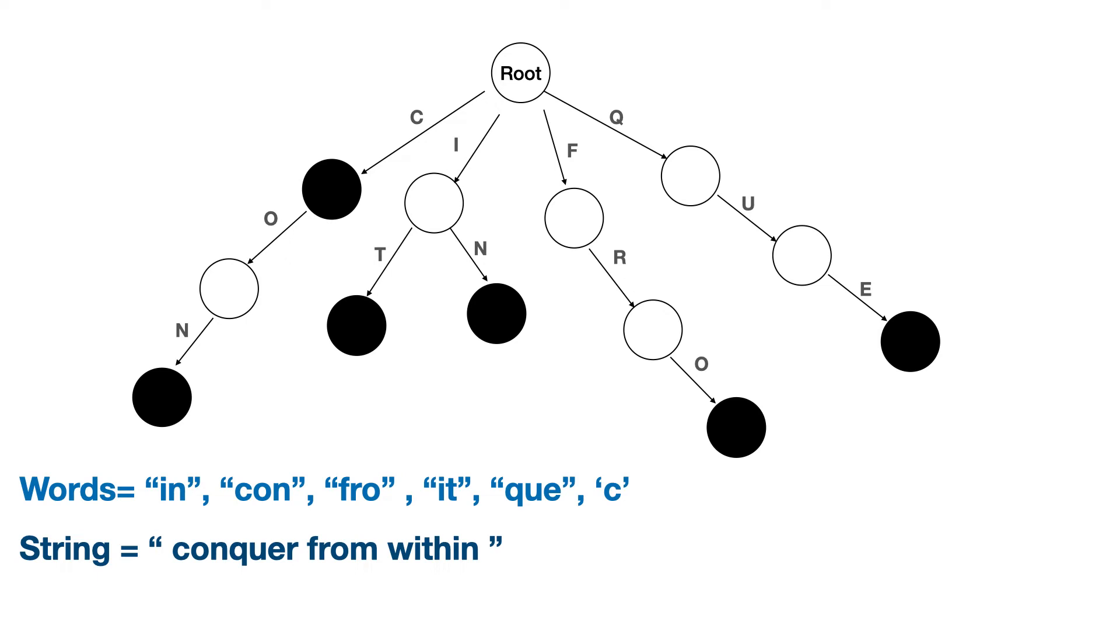Then, you extend it according to the word C, O, N, I, T, I, N, F, R, O and Q, U, E. Now let me explain you about the output states. Since C is a single character and is in the words mentioned, that itself is an output state. And when it completes a complete word C, O, N, that is also a word, so N will be an output state. Similarly for the remaining one.